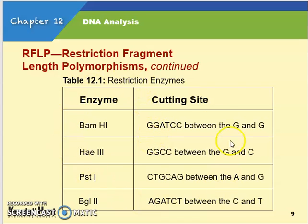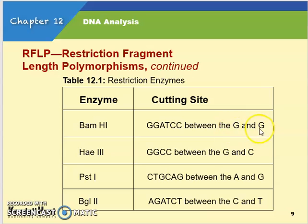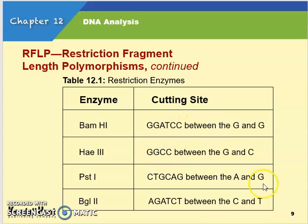Here's a chart showing the different restriction enzymes and where they cut. For example, BAMHI cuts between the G and the G in a GGATCC sequence. You don't need to memorize these, but it's just showing you where the cuts are made.